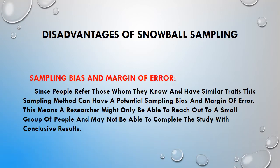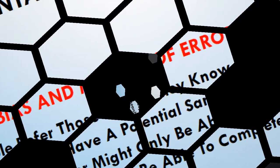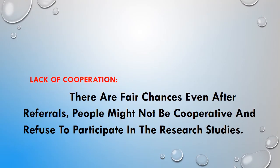Even though there are many advantages, there are also some disadvantages of snowball sampling. There will be sampling bias and margin of error, as people tend to refer those whom they know and who have similar traits. The researcher might only be able to reach a small group of people and may not be able to complete the study with conclusive research. There is also a lack of cooperation, because the researcher does not have direct interaction with the subjects. Even after referrals, people may refuse to participate, and if the researcher needs further clarification, they cannot easily contact the person.